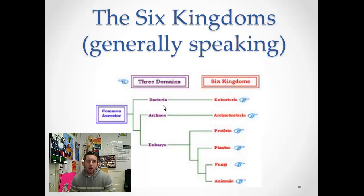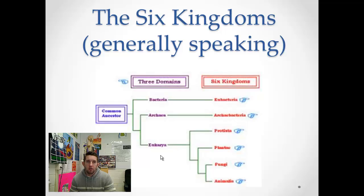These six kingdoms fall as follows. Within the domain bacteria, we have the kingdom eubacteria — all prokaryotic bacterial organisms. Within the domain archaea, we have the kingdom archaebacteria, the extremophile bacterial organisms, also prokaryotic. The remaining four kingdoms are eukaryotic organisms within the domain eukarya: the protists, plantae, fungi, and animalia.